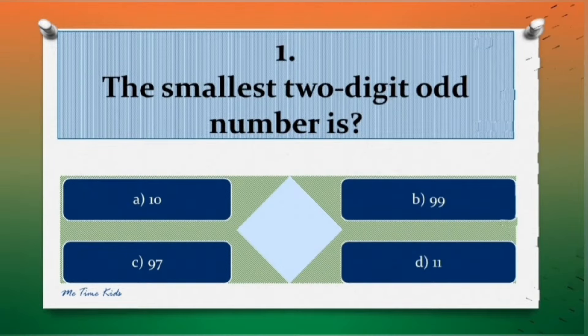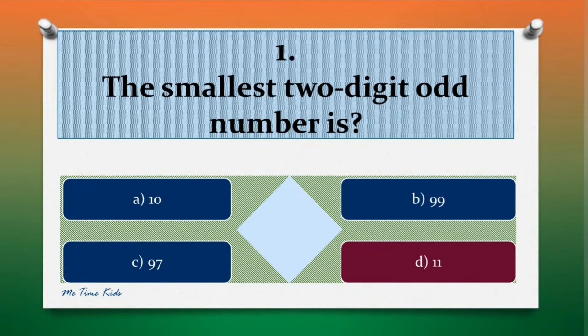So our first question is, the smallest 2-digit odd number is. Options are: a. 10, b. 99, c. 97, d. 11. Time up, correct answer is d. 11.